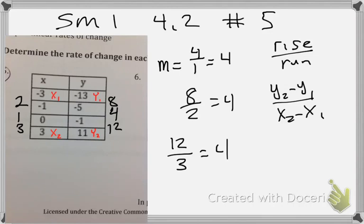Now, I'm going to plug that into my formula. So, what's y2? y2 is 11 minus, what is y1? Negative 13. Over, what's x2? 3. Minus, what is x1? Negative 3.